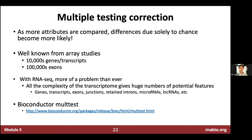StringTie is much more computationally expensive because of its complexity — inferring isoform structures, potentially discovering novel isoforms, and doing sophisticated flow-network-based abundance estimation. The HTSeq-count approach is more efficient — it's essentially just an overlap analysis comparing read alignment positions to known gene positions.